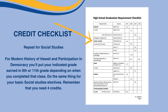For Social Studies, you'll do the same thing. For Modern History of Hawaii and Participation in Democracy, you'll put your indicated grade earned in 9th or 11th grade depending on when you completed that class. Do the same thing for your basic Social Studies electives. Remember that you need four credits.